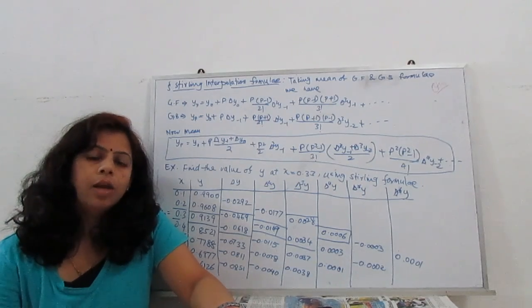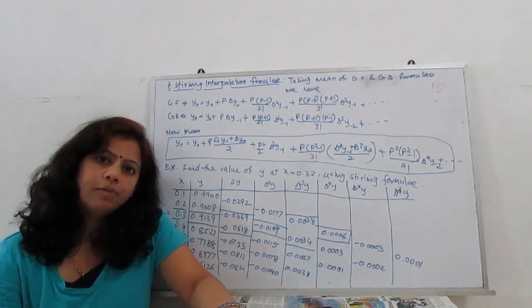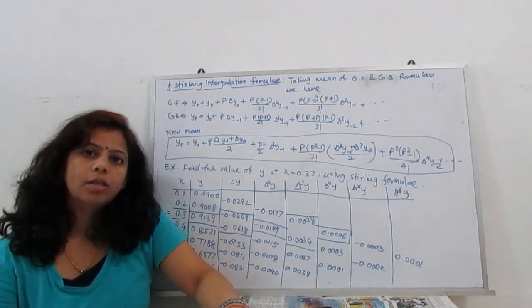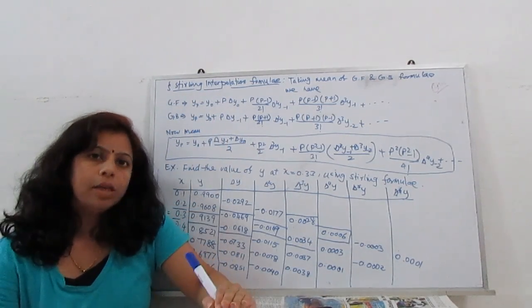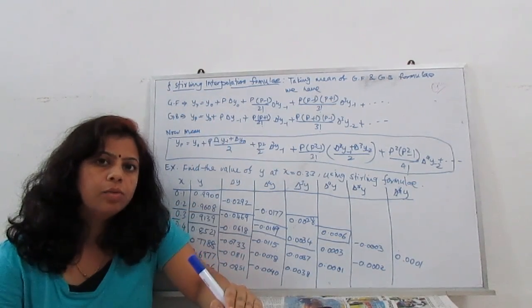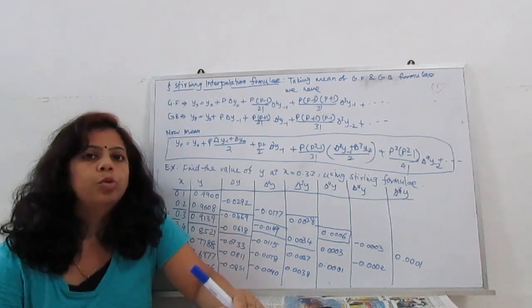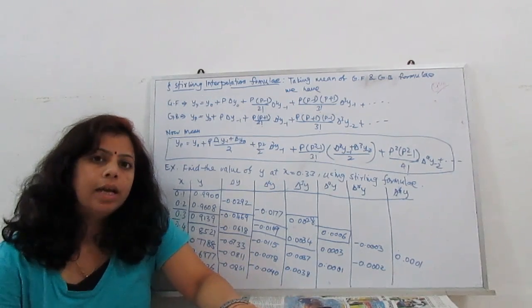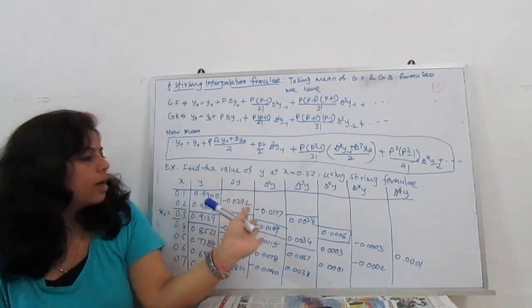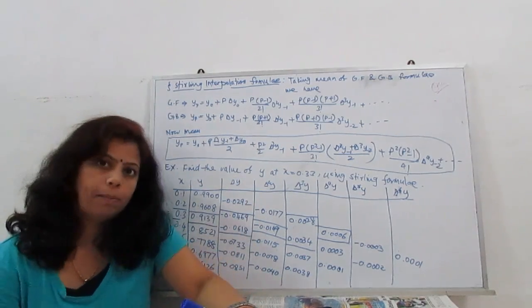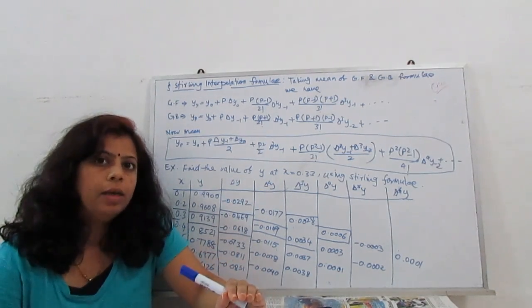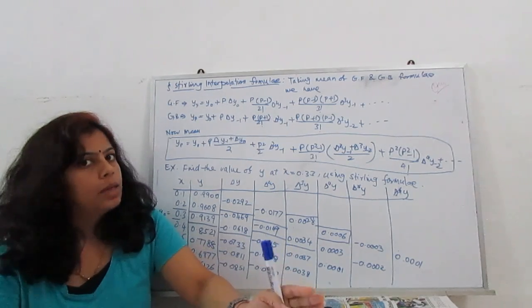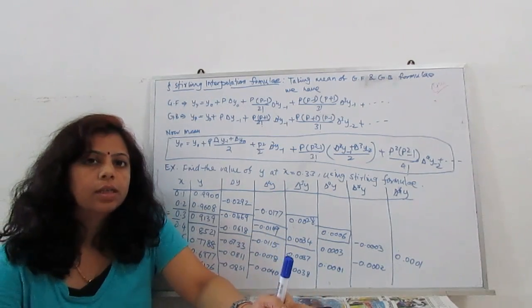Welcome to my new video. Today we discuss the Stirling interpolation formula. In my previous video, you learned how to use Gauss forward and Gauss backward interpolation formulas using the central difference table. You can easily make the central difference table as well — it follows the same pattern.